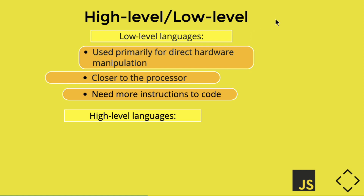Because they are so close to the computer's brain, the computer can only speak and understand binary — zeros and ones only. That makes things difficult. They need more instructions to code, meaning you need to give the computer many more instructions for it to do its work when using low-level languages.